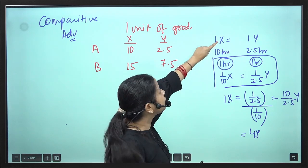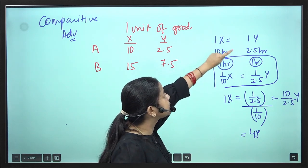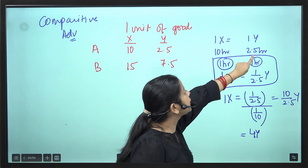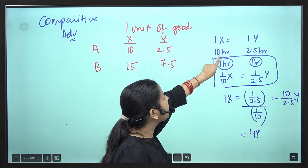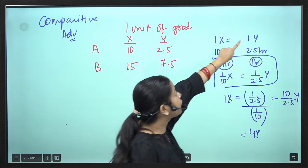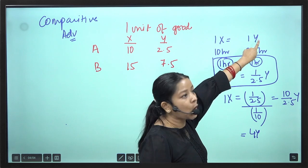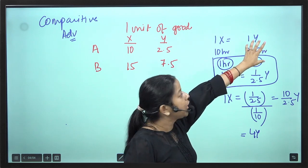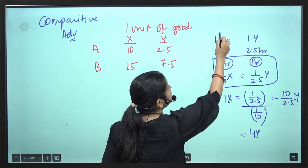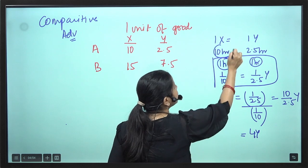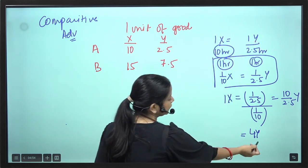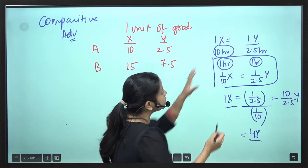Simply put: 10 hours is needed to make 1X, and 2.5 hours is needed to make 1Y. So it takes 4 times as long. Therefore if you produce 1X, it takes 10 hours, in which you could easily have made 4Y.